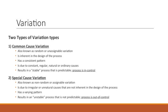Special cause variation, also known as non-random or assignable variation, is due to irregular or unnatural causes that are not always inherent in the design of the process. This results in an unstable process that is not predictable. The process is out of control.